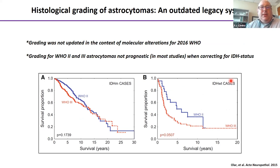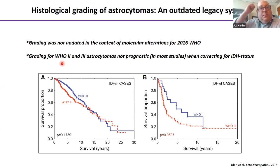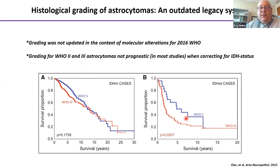Classification changed with 2016, but grading did not. This has been a particular problem in grade 2 and grade 3 astrocytomas. When you correct for IDH status, most studies show there is really no difference in survival between grade 2 versus grade 3 astrocytomas, with overlapping survival curves and no statistically significant difference. It seems grading had been generally reflective of IDH status rather than actual mitotic counts or histological features.